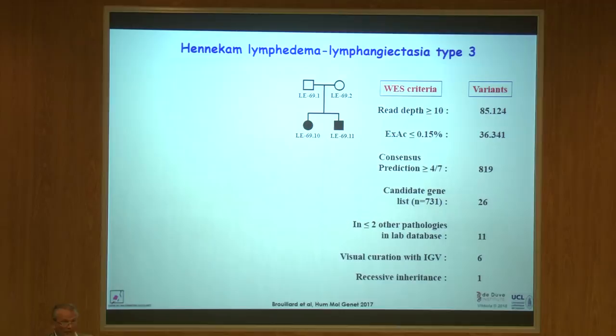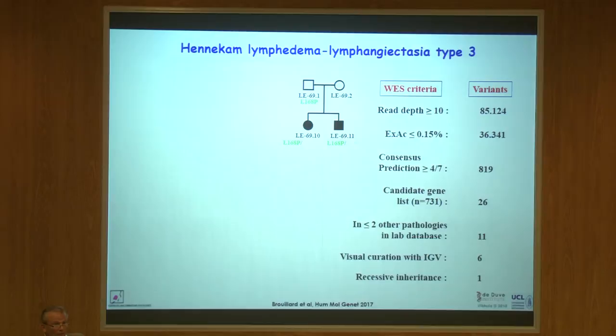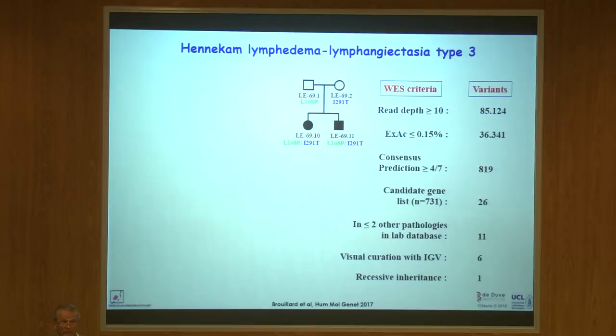It is also possible this is a recessive disease — the mutation coming from both the father and the mother. When we did the filtering using that hypothesis, only one gene fit. The father gives one variant to both children, and the mother has another variant in the same gene which she also gives to both children. Only when you have two variants — both copies of the gene affected — do you develop the disease. The parents, having only one variant each, are carriers and are unaffected.